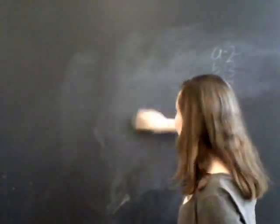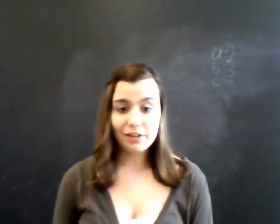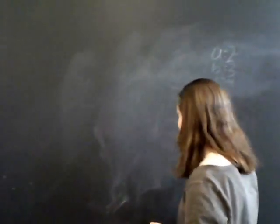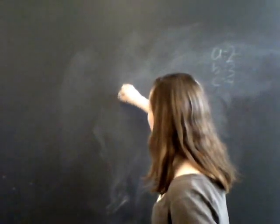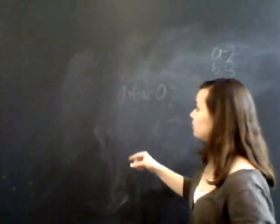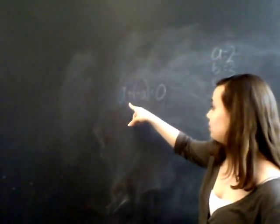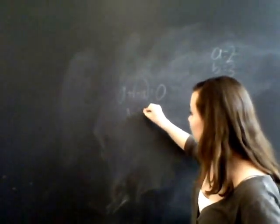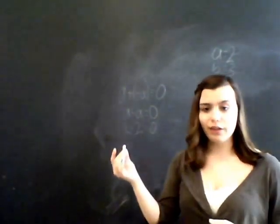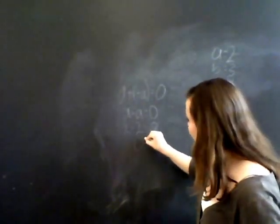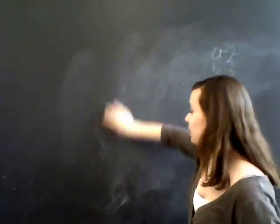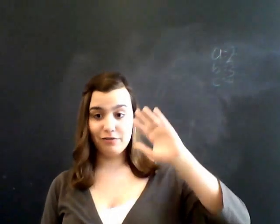The next property is the additive inverse property. This means that a plus negative a equals 0. The negative cancels out the positive, so this becomes a minus a equals 0. Plugging in our values: 2 minus 2 equals 0. If you have two things and you take away two of them, then you have zero things left. That was the additive inverse property.